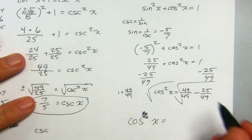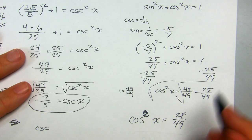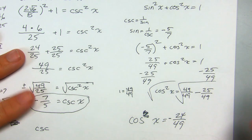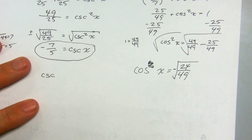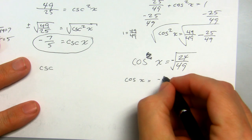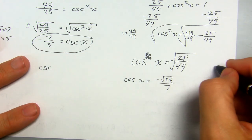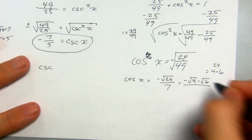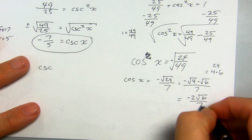Cosine x equals the square root of 24 over 49. But I also know cosine needs to be negative. Whenever you take the square root, you get a positive or negative, so we take the negative version. That gives cosine x equals negative square root of 24 over 7. Simplifying: 24 equals 4 times 6, and 4 is a perfect square, so negative square root of 4 times square root of 6 over 7, which equals negative 2 radical 6 over 7. There's your cosine of x.